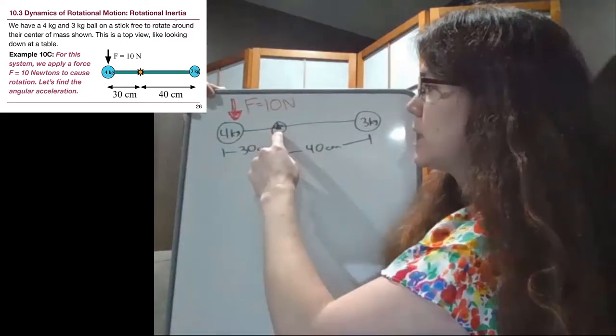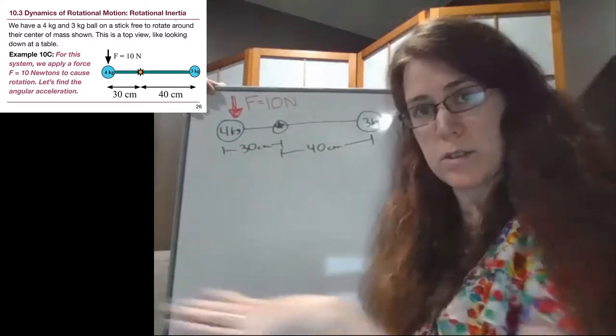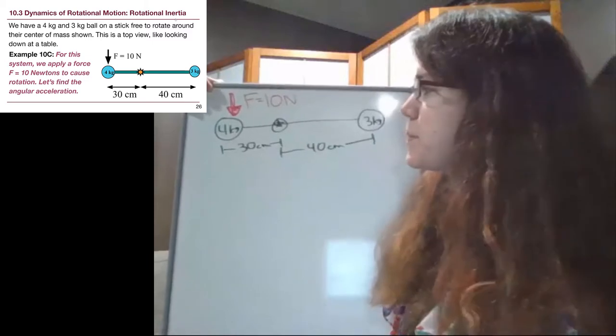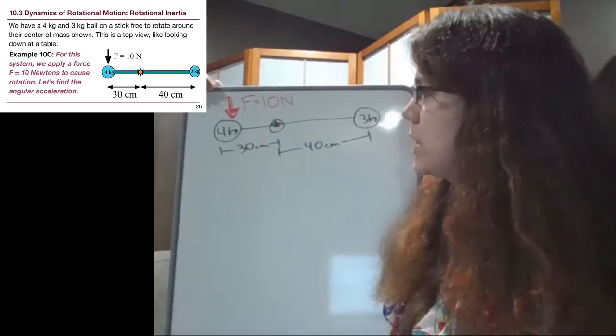So this is basically holding it in place, it's going to rotate, this is a top-down view, so it's going to rotate around and around, and we're trying to figure out how quickly it speeds up, so the rate at which it speeds up.